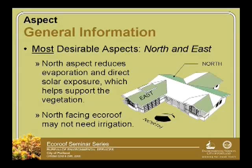In general, the most desirable aspects are really north and east because they really reduce that irrigation demand and that water usage of the plant material, and just the heat gain of materials like edging and those kinds of things. We don't want you to install an eco-roof that looks like a patchwork — we're not recommending that.